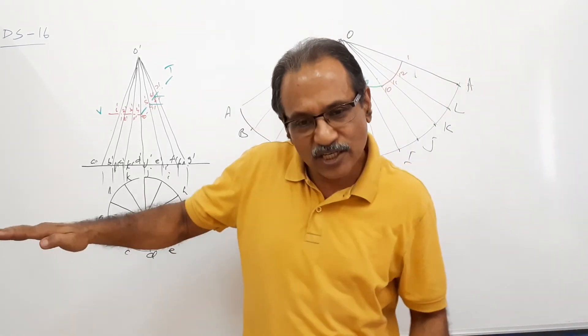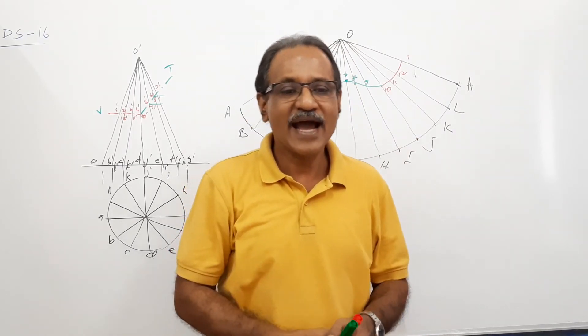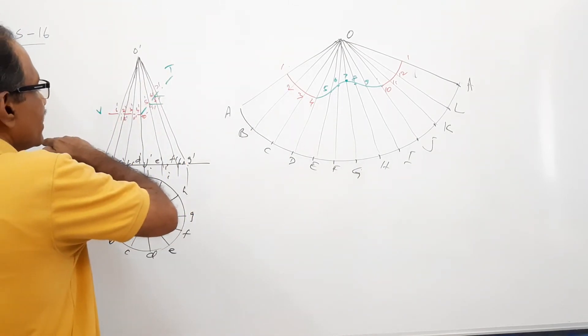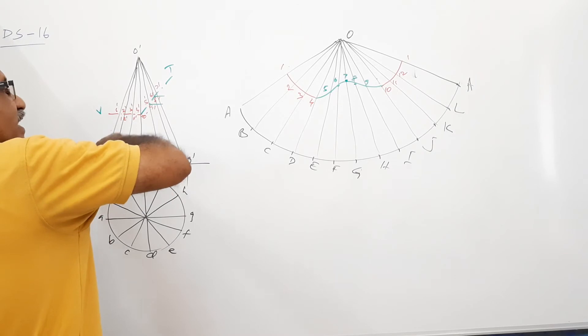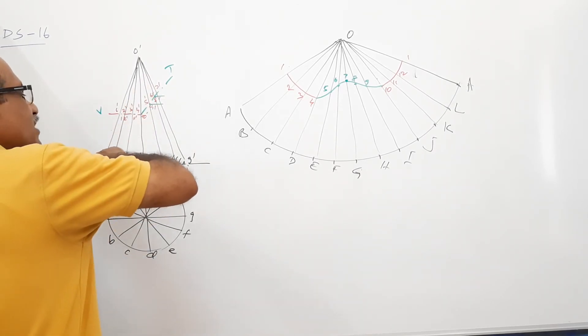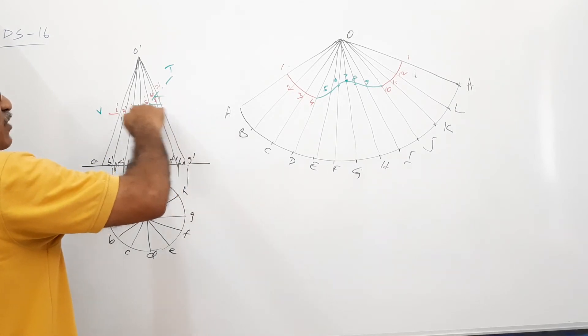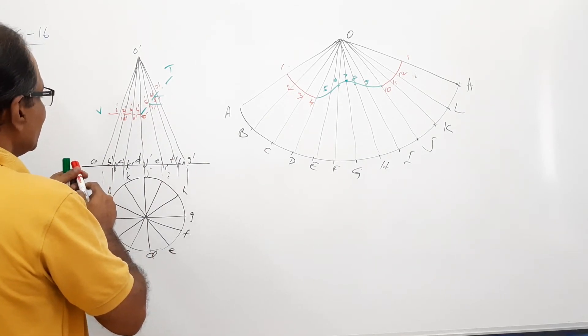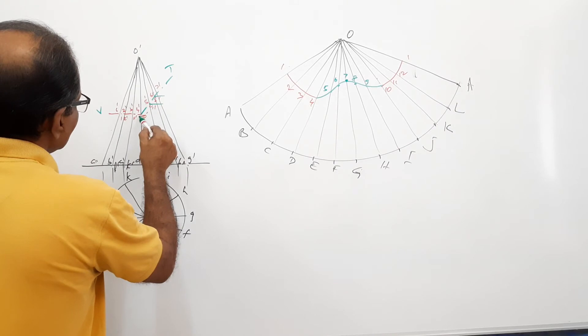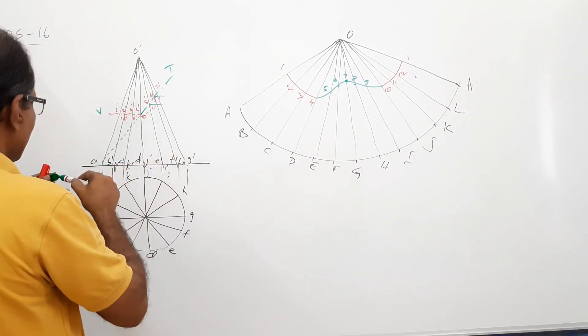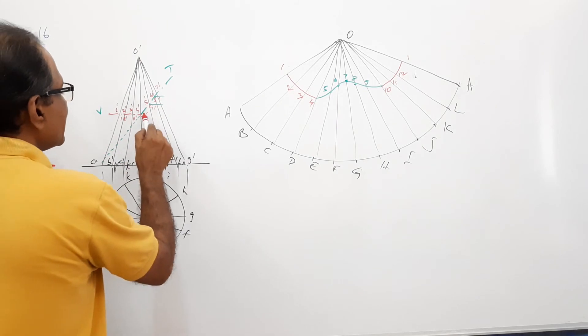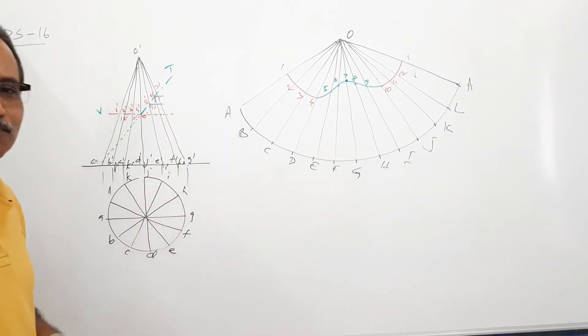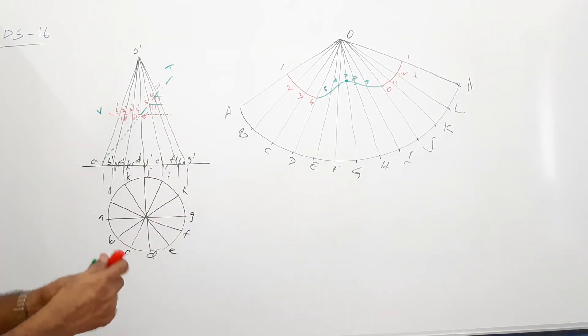Now, there is another option. Execute the horizontal cutting plane first and execute the 45 degree cutting plane second. Or cut it from here, 45 degrees, cut it from there. I repeat, cut the 45 from here and cut the horizontal from there. So what happens in that case?